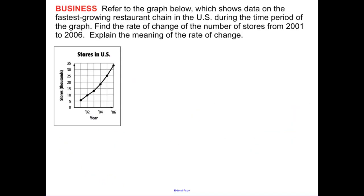The next one is now looking at a graph. And again, notice on our graph, we have the x labeled, the y labeled in terms of what their meaning is, and I have a title on my graph. Refer to the graph below, which shows data on the fastest growing restaurant chain in the U.S. during the time period of the graph. Find the rate of change or the slope of the number of stores from 2001 to 2006. Explain the meaning of our rate of change.